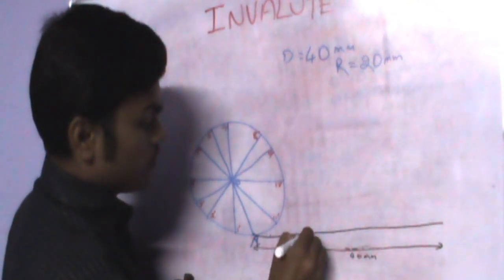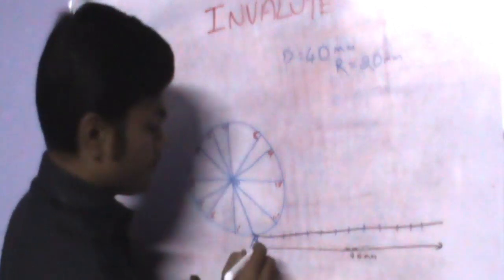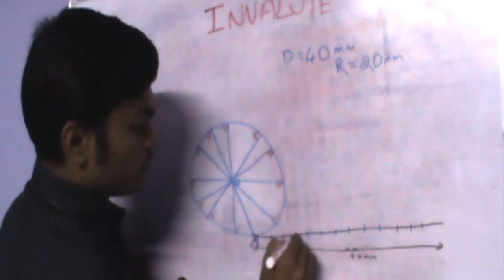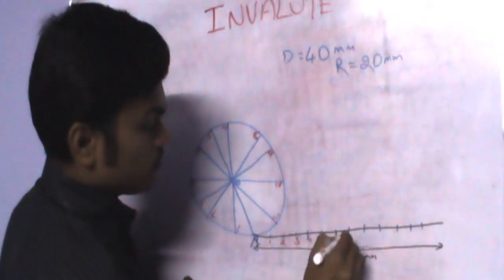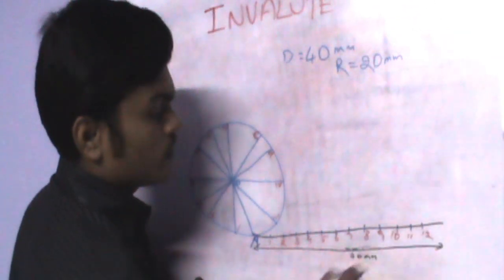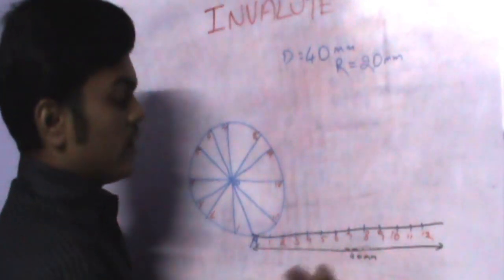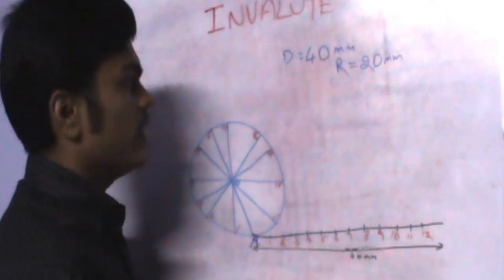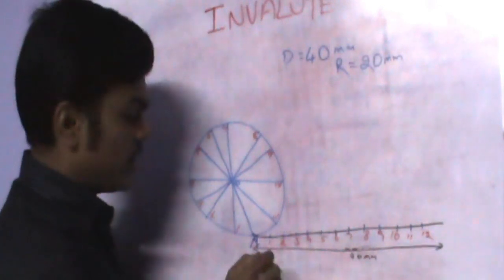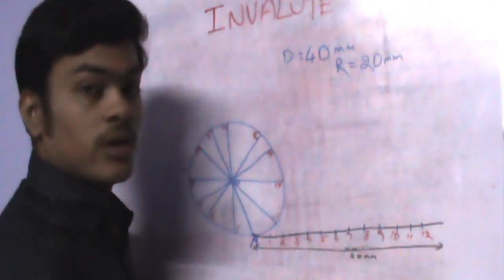I am going to divide the tangent into 12 equal parts, labelling them 1, 2, 3, 4, 5, 6, 7, 8, 9, 10, 11, 12. To find the spacing, take 40 divided by 12 to get the equal interval measurement. You can then mark these divisions using your compass or a ruler.